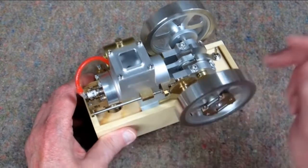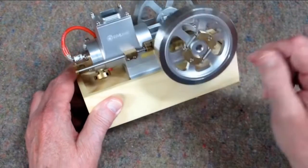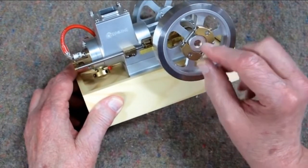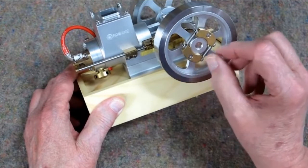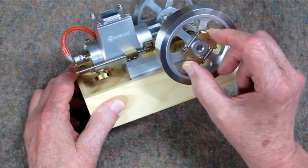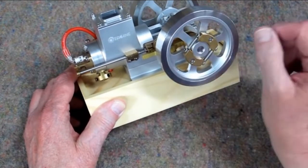It continues to fire until it builds up enough inertia or speed in the flywheel, and this governor system starts to expand due to the centrifugal force. And that is controlled by the weight of these two pieces of brass and the springs.